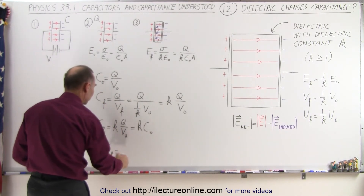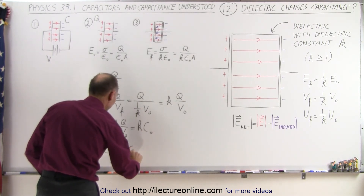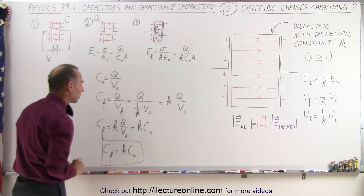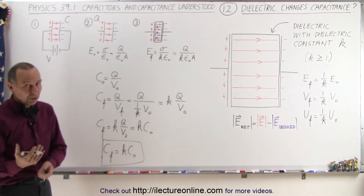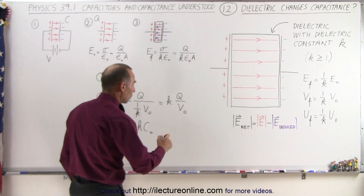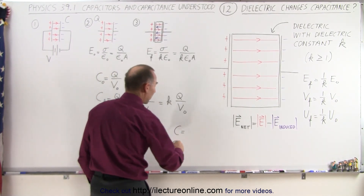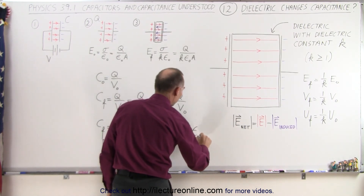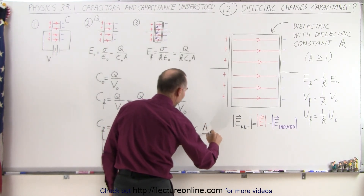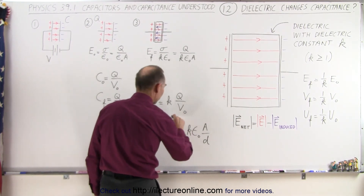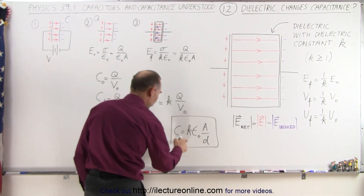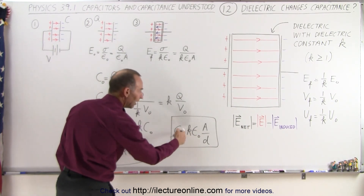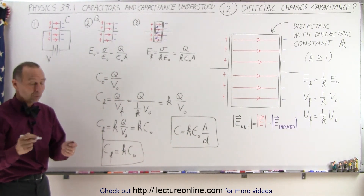So the final capacitance, when you put a dielectric in there, is k times the initial capacitance before the dielectric was inserted. And therefore that's why the equation for capacitance, based upon the physical aspects of the capacitor, is going to be k times epsilon sub-naught, times the area of the plates, divided by the distance between them. You can see that this is where the equation came from, because the capacitance is increased by a factor of k when a dielectric is placed between the plates.